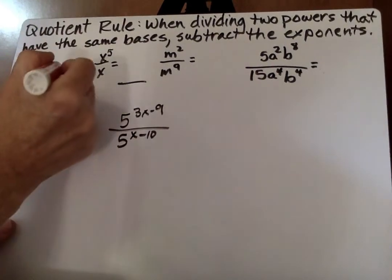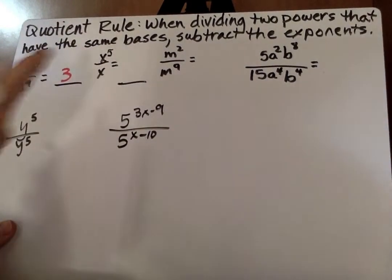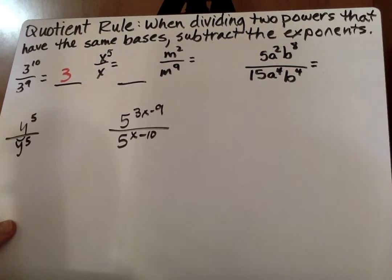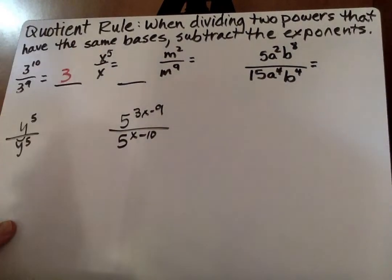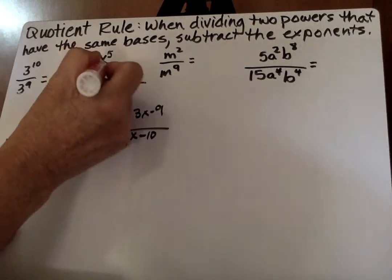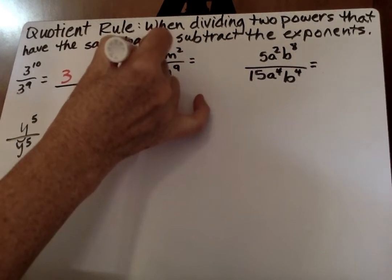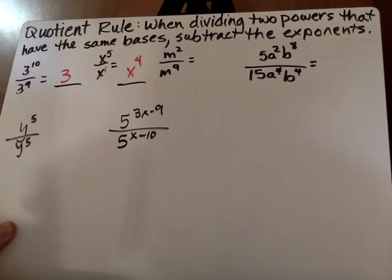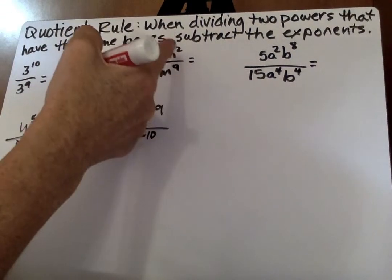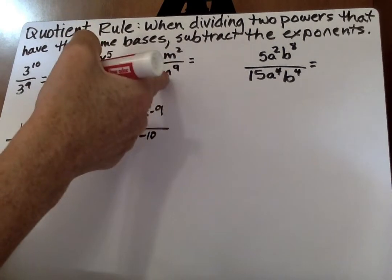So 3 to the 10th over 3 to the 9th. 10 minus 9, 3 to the 1st power. And if it's to the 1st power, you don't necessarily need to write the 1 down. Here, x to the 5th divided by x. Remember, when nothing is there, it's a 1. 5 minus 1 and m squared over m to the 9th.